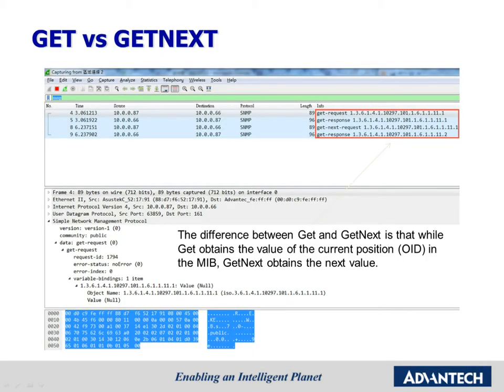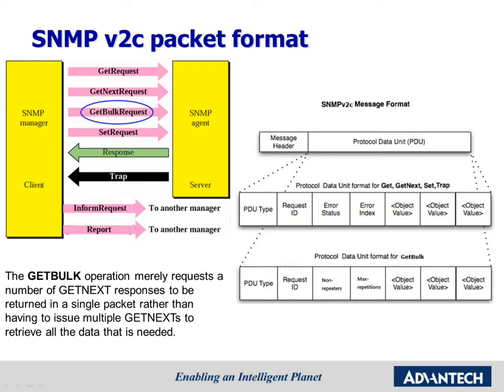We can see the difference between GET and GET NEXT. GET will respond with exactly the OID you request, while the GET NEXT command will respond with the next OID after the one you request. For the data format of v2c, there are not only the previous functions but also some new functions. In v2c, TRAPs use the same PDU as GET, GET NEXT, and SET. There is a new command for v2c called GET BULK. The GET BULK request can retrieve lots of OIDs in one request.